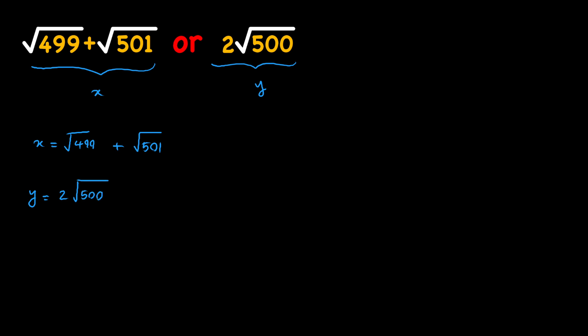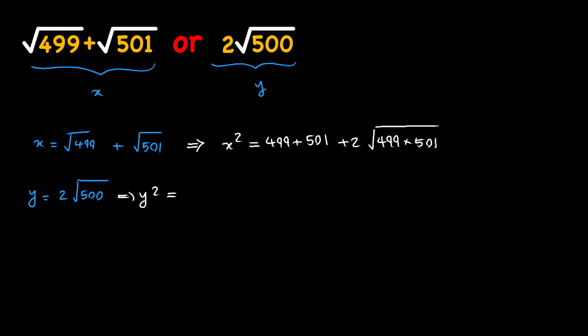Since we're dealing with square roots, it's a good idea to square both sides to eliminate some of them. For the first equation, x squared equals 499 plus 501 plus two times the square root of 499 times 501. For the second equation, y squared equals four times 500, which is simply 2000.